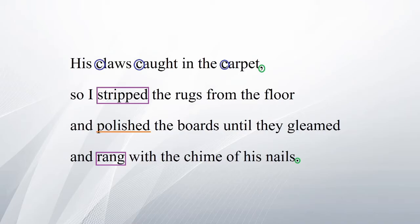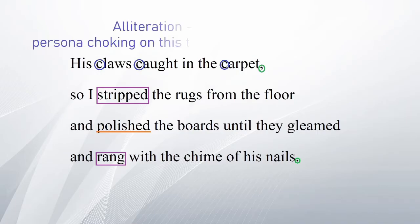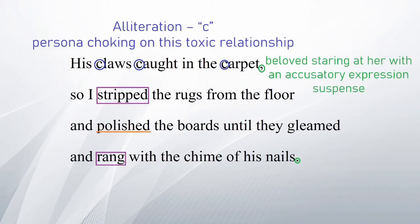'His claws caught in the carpet' — the alliteration of C in 'claws', 'caught', and 'carpet' brings in the possibility of the persona choking on this toxic relationship due to the beloved's harsh and arrogant attitude. The pause gives the idea the beloved is staring at her with an accusatory expression, bringing a feeling of suspense. At this point the reader might worry that the beloved's claws getting caught will infuriate him, and the persona is used as his outlet for negative emotions. 'So I stripped the rugs from the floor' — the word 'stripped' is harsh and may have sexual connotations due to the nakedness it stresses upon, so you may theorize with that in mind.